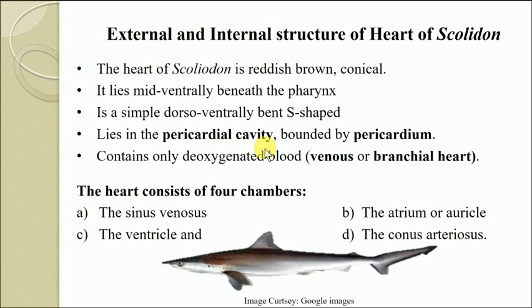The heart of Scoliodon contains only deoxygenated blood. Hence, it is also called the venous heart or branchial heart, because this heart receives deoxygenated blood from the various body parts and pumps it into the gills for oxygenation. The blood coming into the heart of Scoliodon is always deoxygenated and is pumped towards the gills.